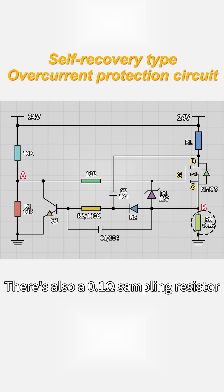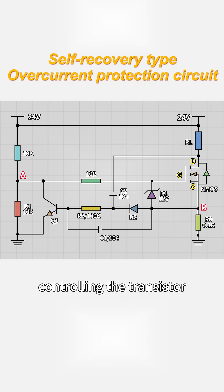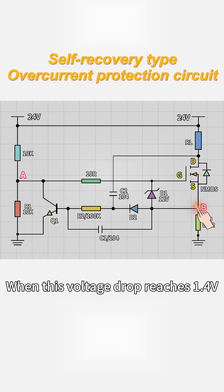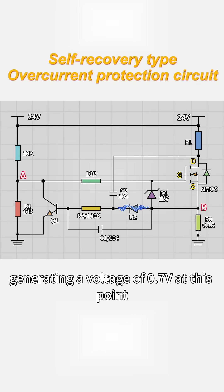There's also a 0.1 ohm sampling resistor, R0, which creates a voltage drop across it, controlling the transistor. What's the purpose of controlling the transistor? When this voltage drop reaches 1.4V, D2 turns on, generating a voltage of 0.7V at this point.